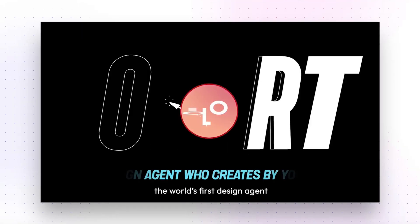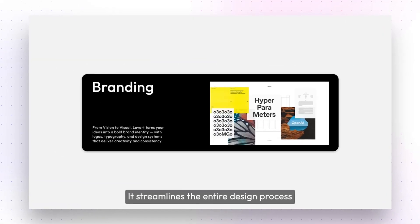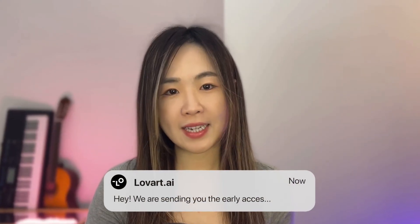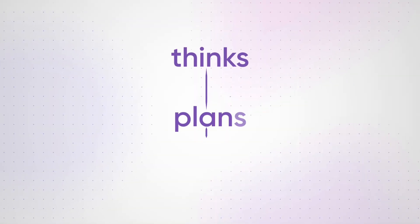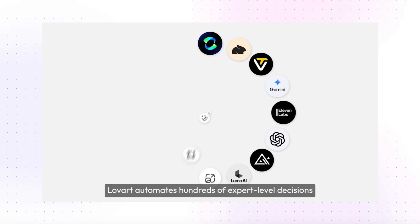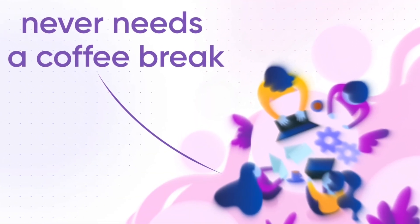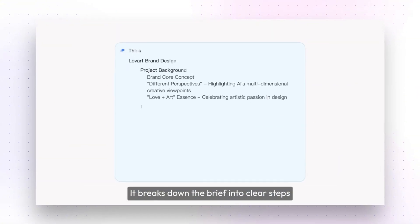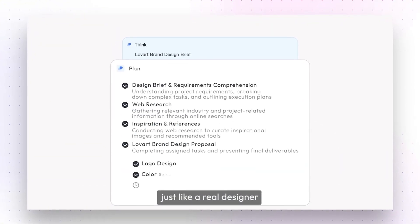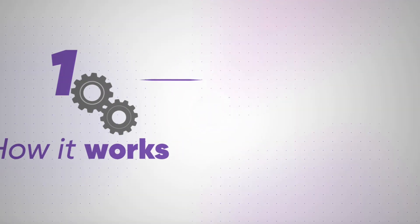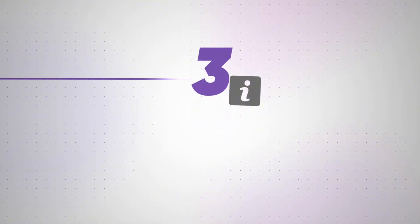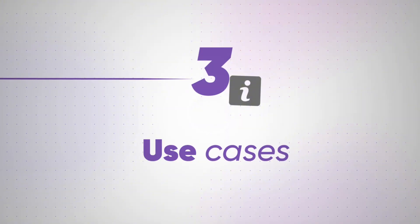Today we're putting LoveArt — the first AI agent created specifically for design — to the test. I just received an early access invite and want to test it out with you to see if this thing actually works. Unlike typical type-and-generate tools, LoveArt thinks, plans, and executes by coordinating multiple AI models like an on-call design team that never needs a coffee break. You give it minimal input and it breaks the task down into steps, from style strategy to final output. I'll show you exactly how it works, run a few real-world tests, and highlight use cases that could save you hours in your daily design flow.